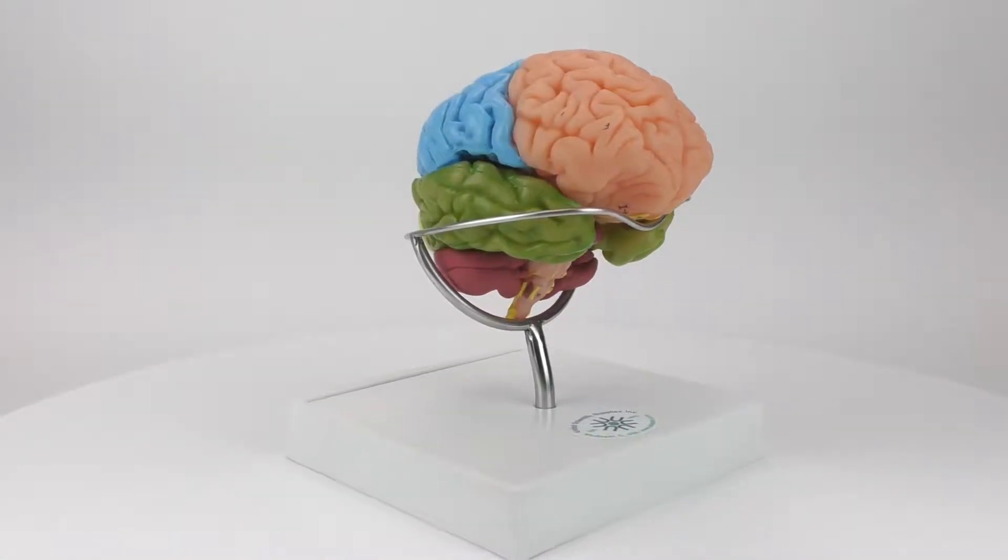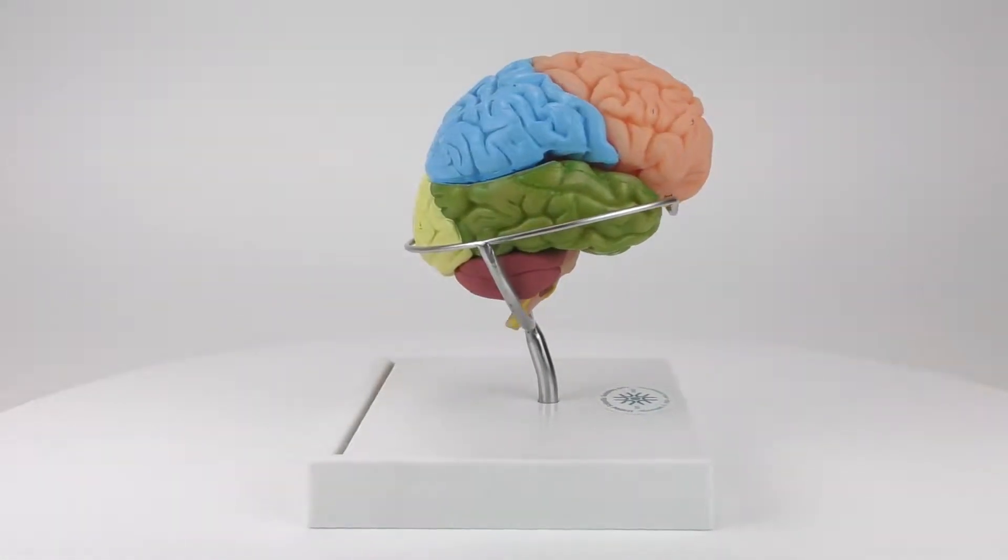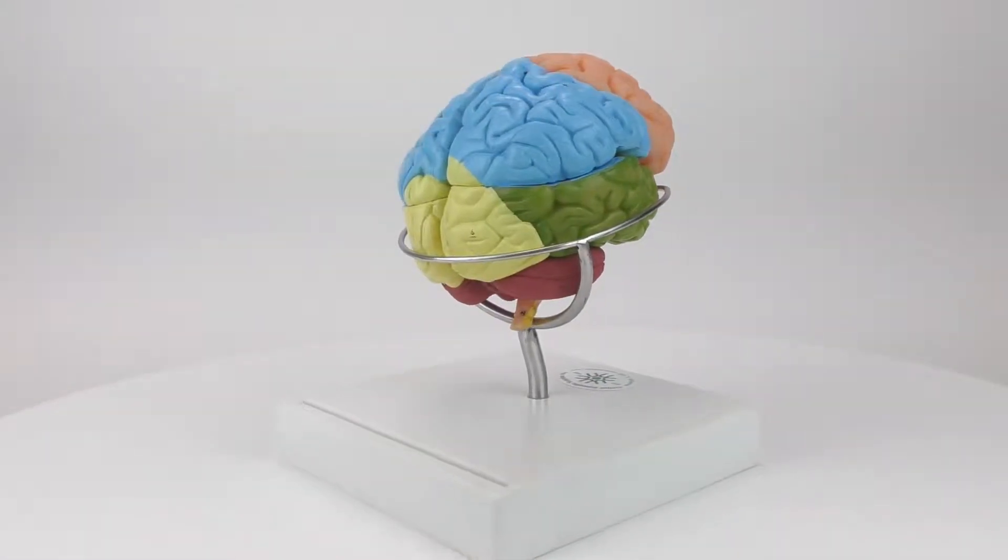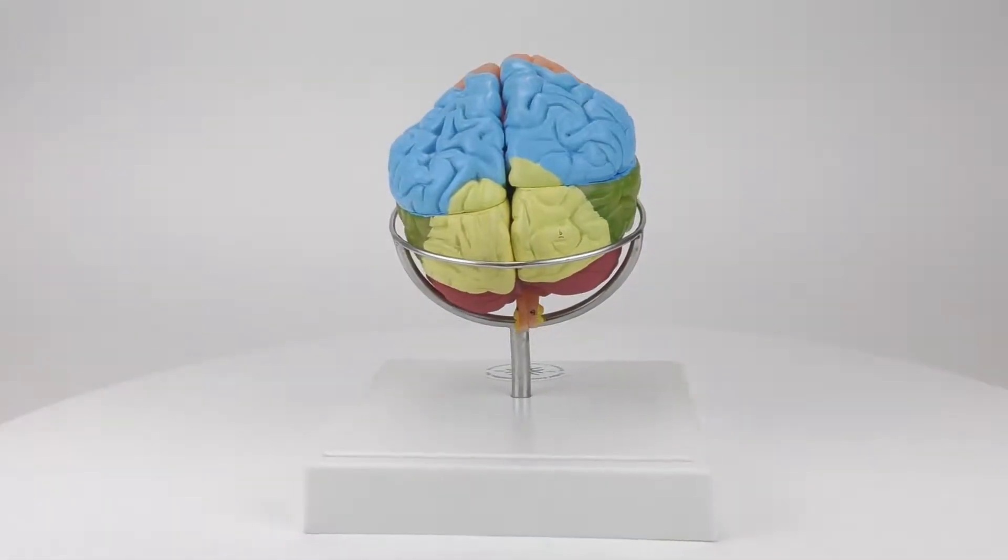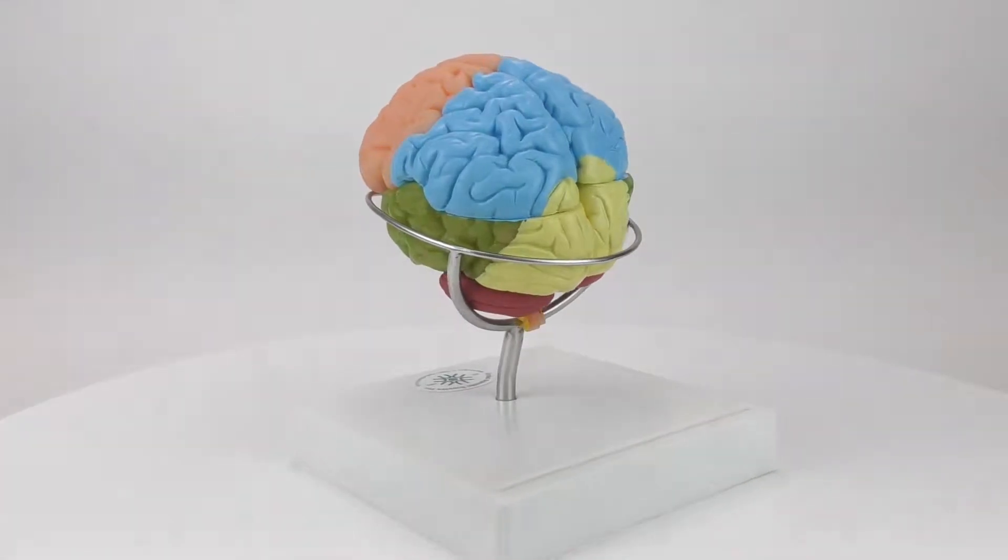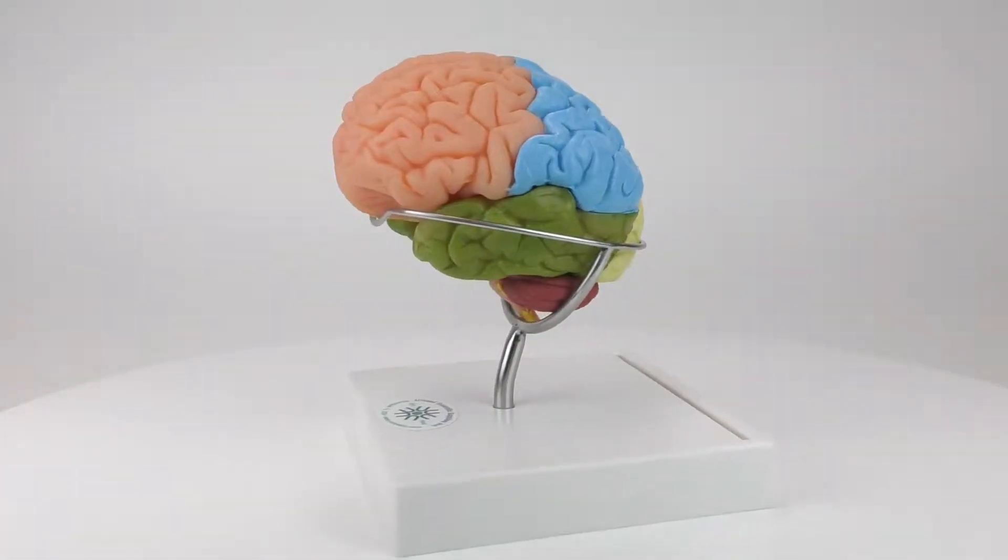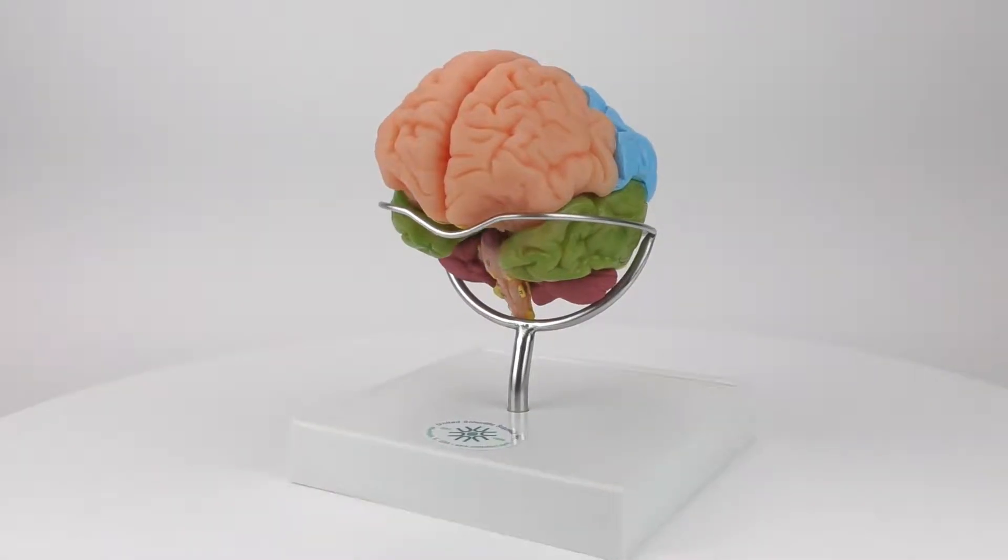The eight part full brain model is made from PVC plastic. It has been diligently hand painted to show all the individual lobes. It is mounted on a metal wire harness that can be easily rotated.